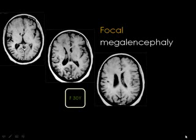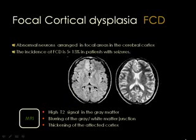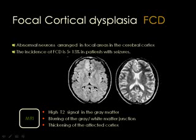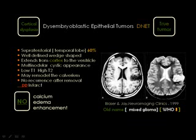Hemimegalencephaly may be focal, affecting only part of the hemisphere such as the frontal lobe. In that situation, findings are localized to the frontal lobe and you can see the characteristic anterior configuration of the frontal horn. Cortical dysplasia means there is an abnormal signal in the cortex of the brain in a focal area — an abnormality in cortical formation due to abnormal proliferation. On FLAIR imaging you can see abnormal signal in the frontal cortex in a parasagittal location with no mass effect.